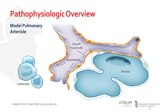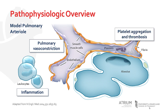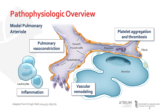Several processes are implicated in the pathophysiology of PAH, as illustrated in this example pulmonary arteriole. An imbalance of physiologic vasoconstrictors and vasodilators leads to net vasoconstriction of the pulmonary smooth muscle. Additionally, inflammatory mediators, such as leukocytes and other components of the immune system, are also often involved. Platelet aggregation and thrombosis may occur as a consequence of alterations in physiologic blood flow or due to imbalances in normal coagulation pathways. Finally, over the long term, these insults can cause pathologic changes to the structure of the vascular smooth muscle, a process often referred to as remodeling.